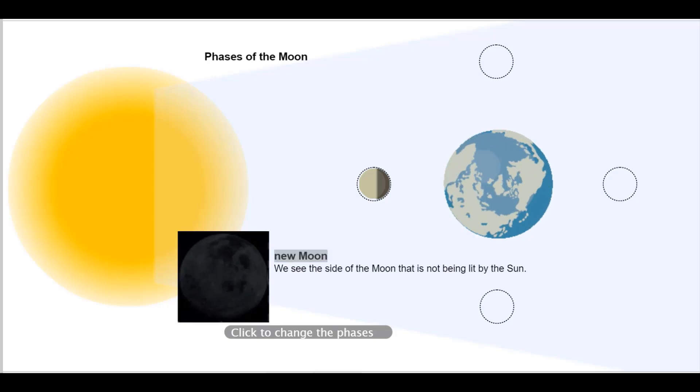New moon. We see the side of the moon that is not being lit by the sun. Luna nueva. Vemos la parte de la luna que no está siendo iluminada por el sol. Por lo tanto, es una luna que prácticamente no se ve.